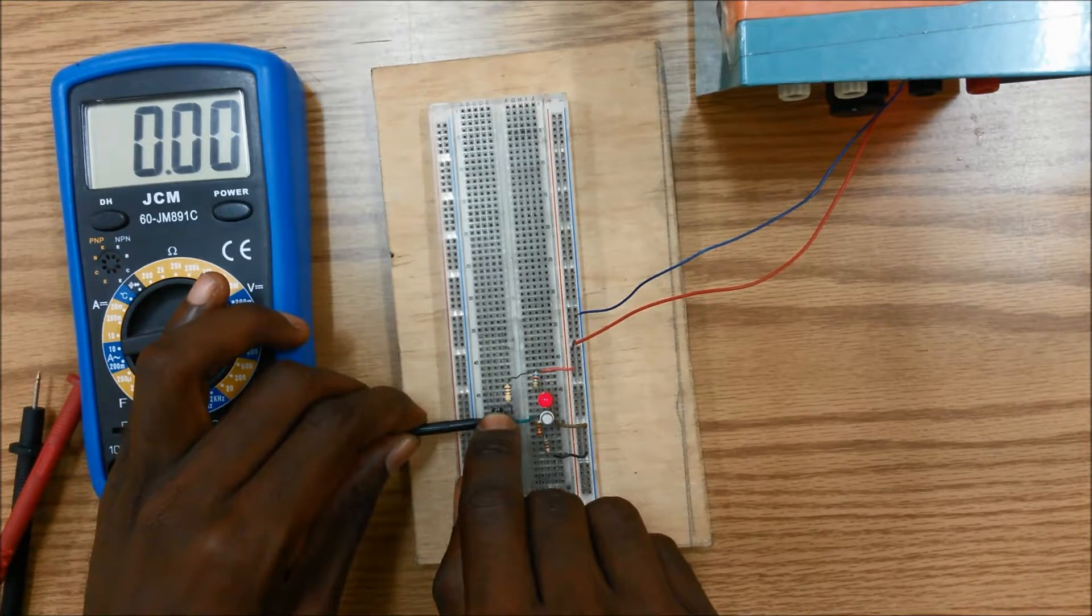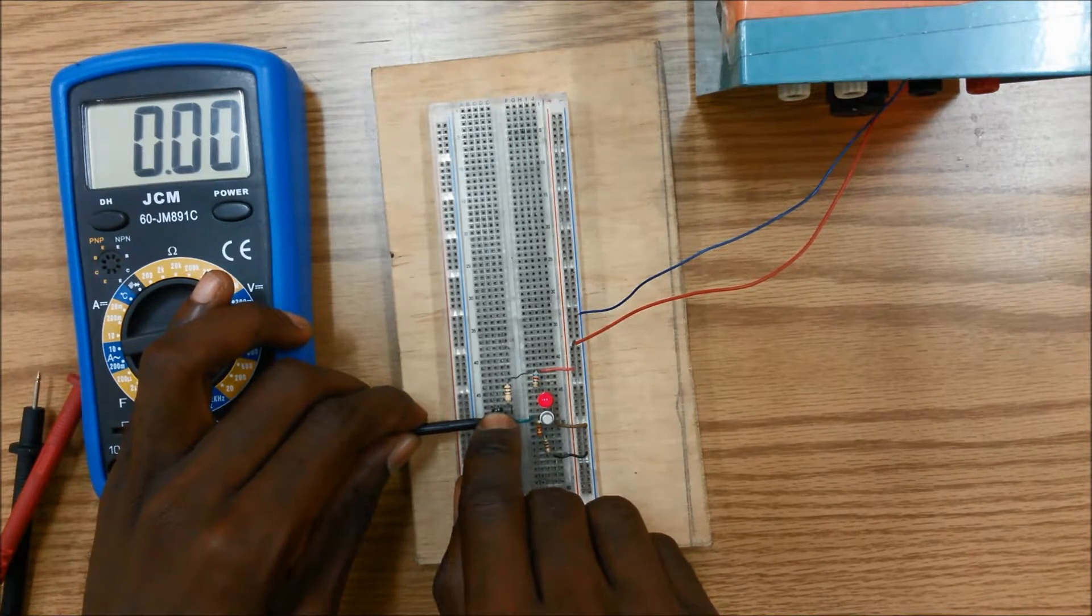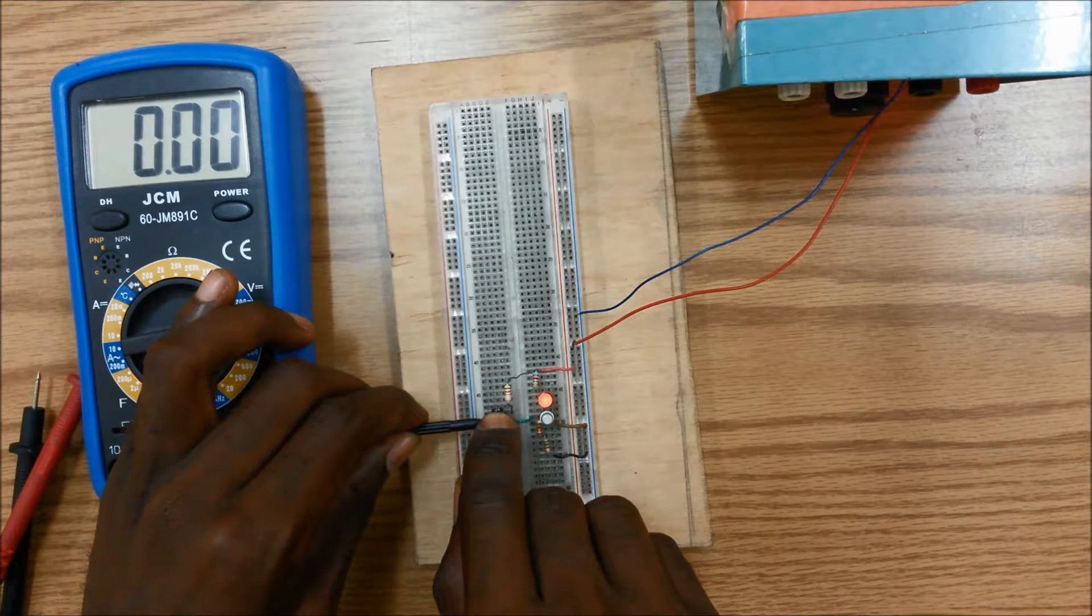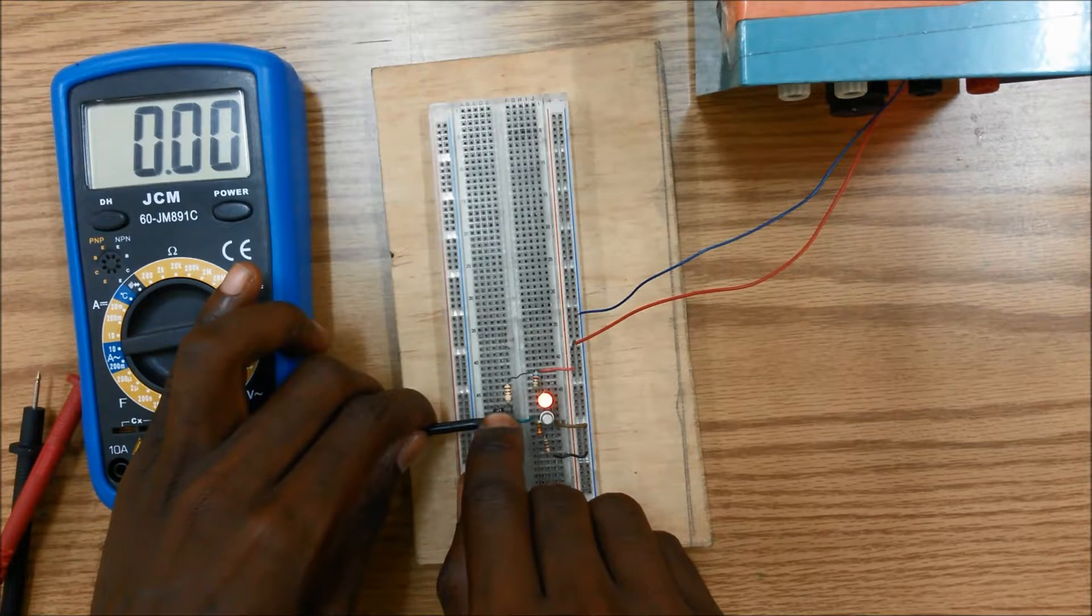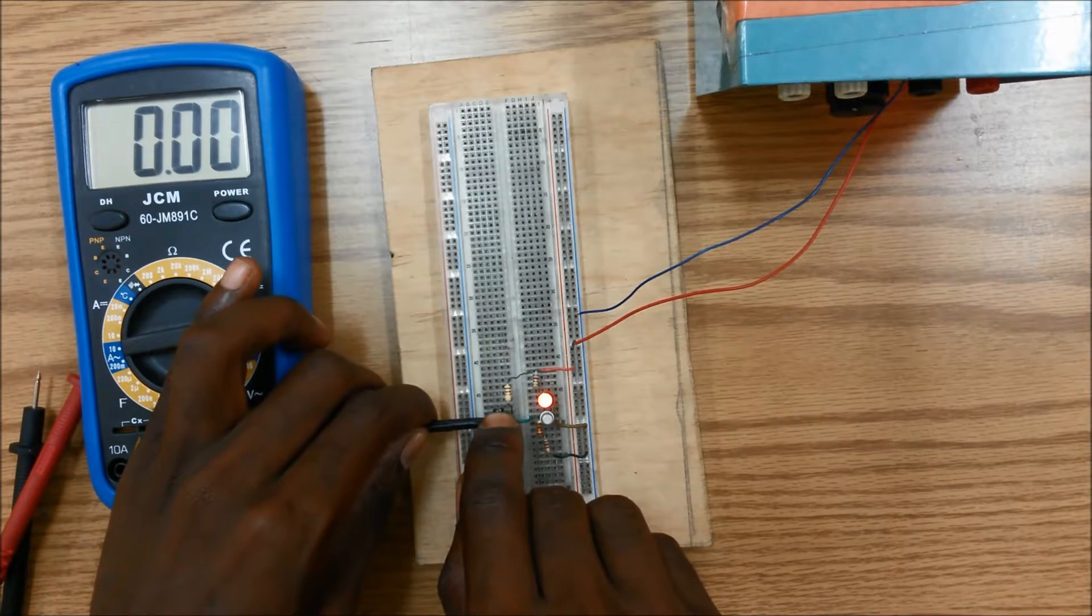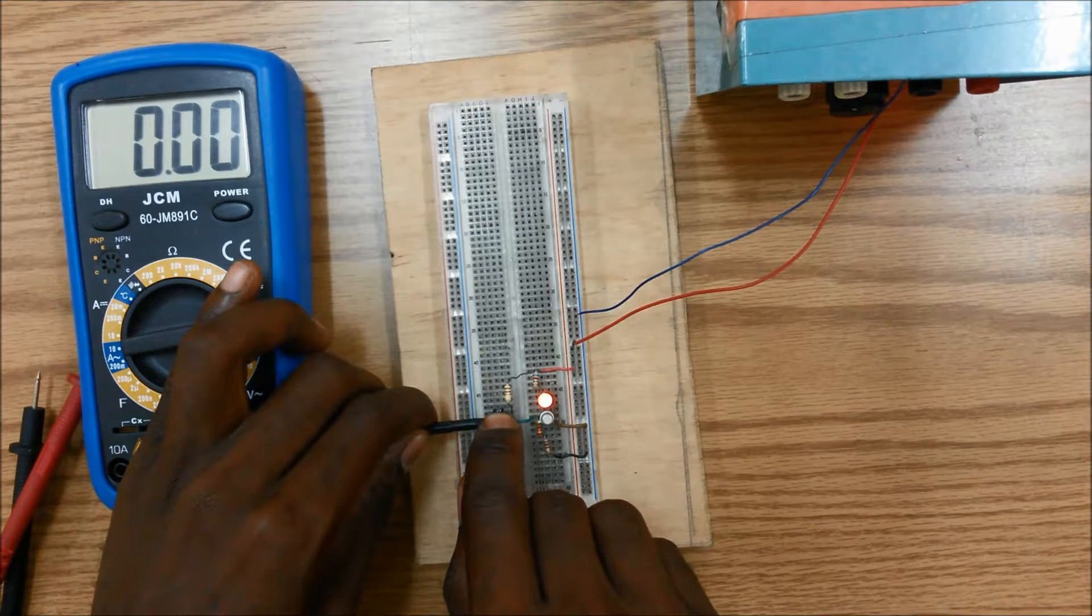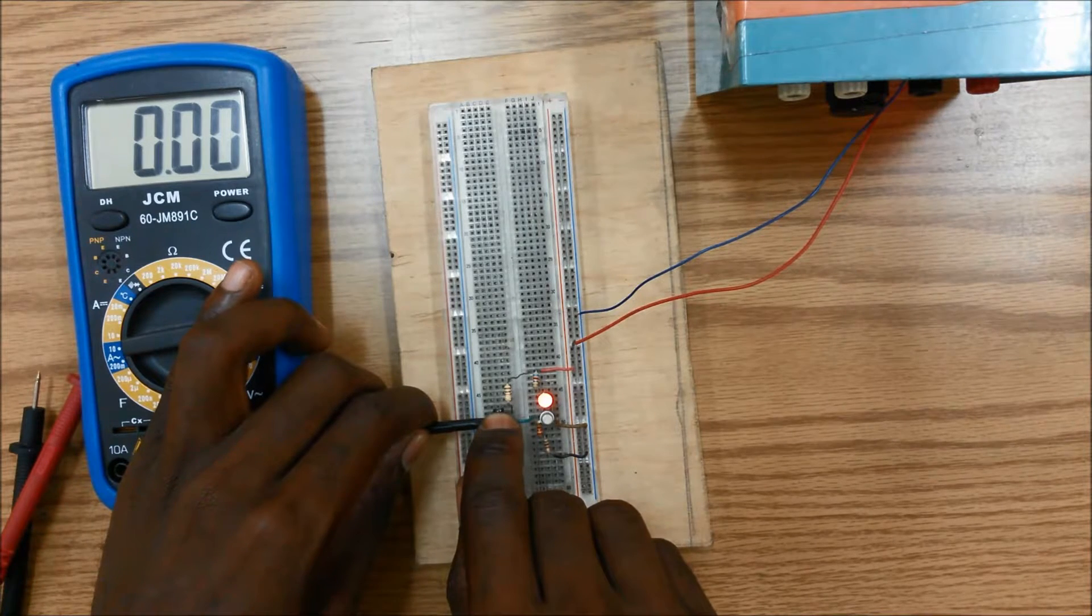Now that current flow gradually increases as I decrease the resistance at the base. And if I were to increase the resistance, therefore decrease the current going into the base, the current at the collector will also decrease.